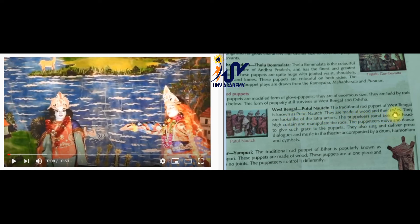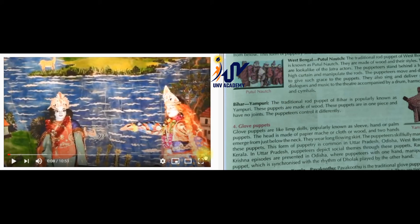These puppets are made of wood in their own style. They are made to resemble Jatra actors. The puppeteers stand behind a head-high curtain and manipulate the rods. The puppets move and dance with great grace. They also sing and deliver dialogues, with music accompanied by a drum, harmonium or cymbals. This is the Rod Puppet.